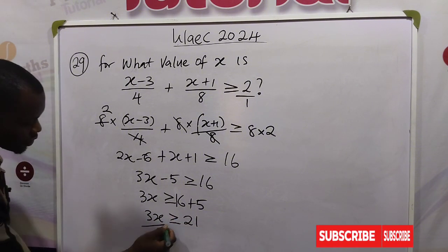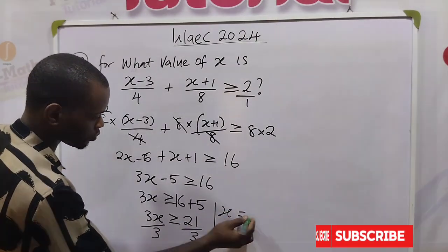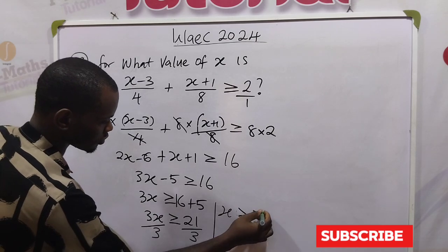To get x, we divide by 3, divide by 3. So the value of x will be greater than or equal to 7.